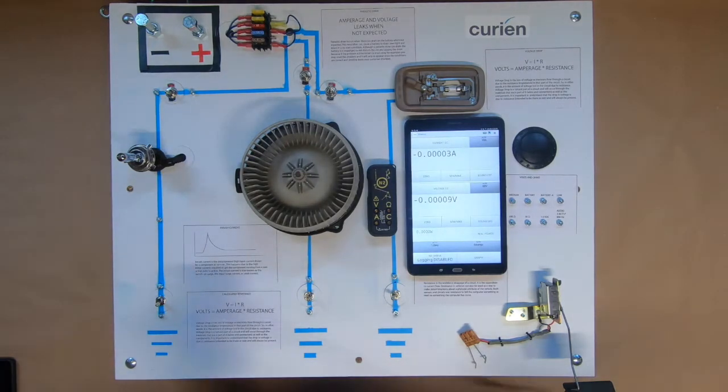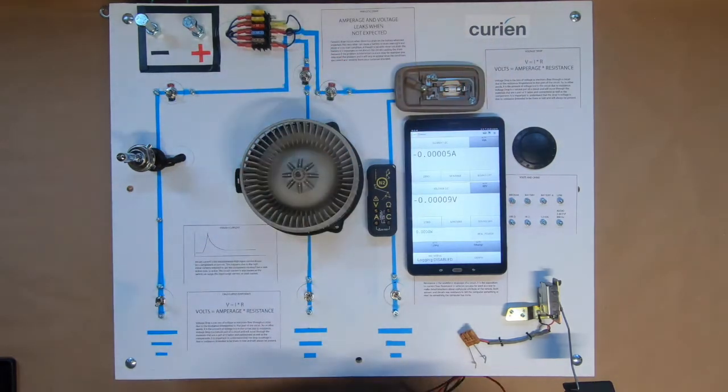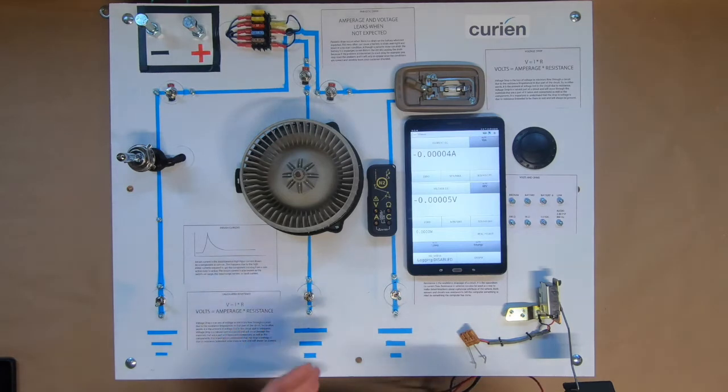And before I jump into it, I just wanted to talk to you a little bit about why and what you would use this testing for. So parasitic draw testing is used for determining where and what is drawing on your vehicle's battery and that may cause the battery to create a no start situation in the morning or go dead or flat overnight.